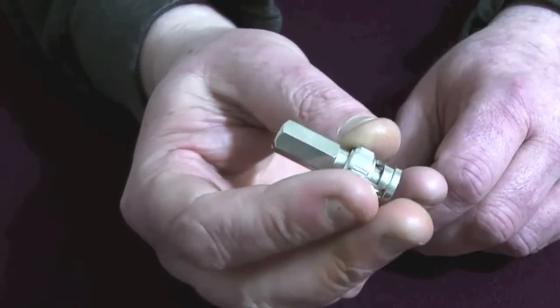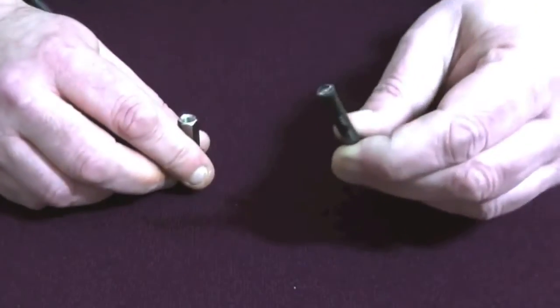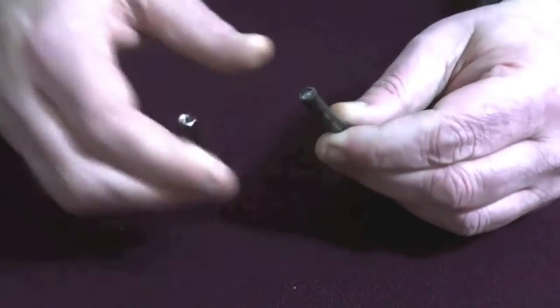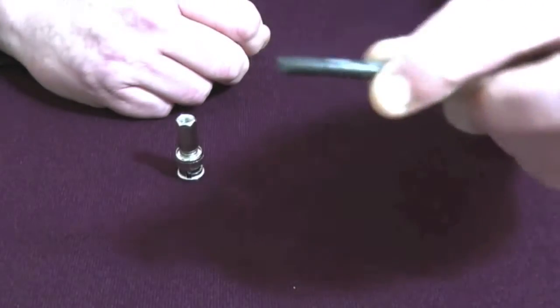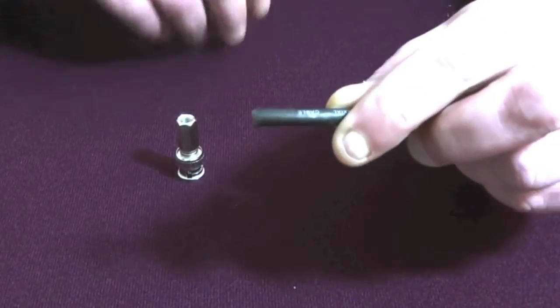Lots of people ask how to do it. They get it confused with putting an F connector on, where you have to put the braid over the black. This is slightly different. Let me give you a quick demonstration.